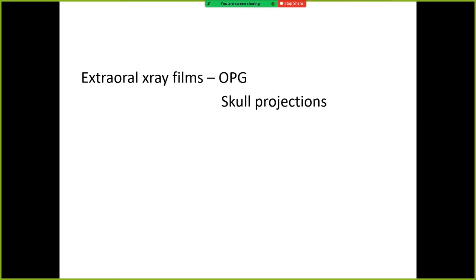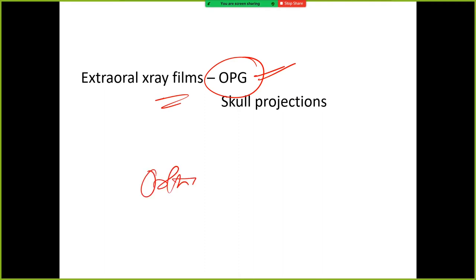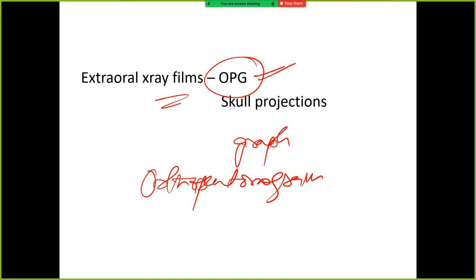Now extraoral radiographs — in extraoral films, what do we have? OPG. What does OPG stand for? Orthopantomogram. And the machine is called an orthopantomograph.